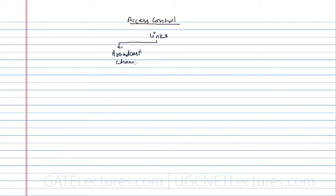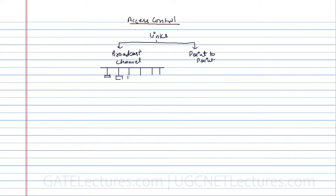We have the broadcast channel and the second one is the point-to-point channel. What do you mean by broadcast channel? Broadcast channel means if in a network there are more than one computers or hosts which are attached — for example, in this case we have six hosts which are connected — if one computer wants to send data to all the other systems, he can broadcast it. That is called broadcasting.